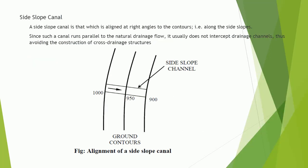Side slope canal — a side slope canal is aligned at right angles to the contours, that is along the side slopes. These canals run parallel to the natural drainage flow and usually do not intercept drainage channels, hence helping in avoiding the construction of cross drainage structures.